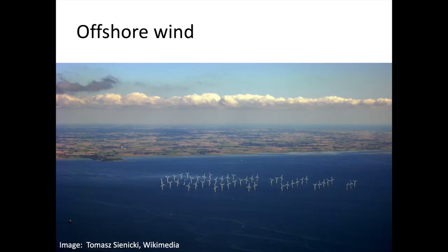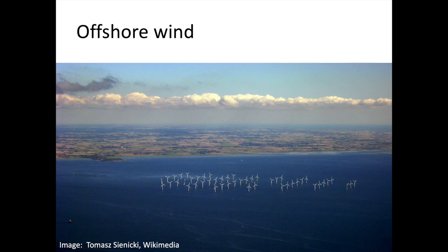Offshore wind generation presents some significant advantages over land-based wind farms. Offshore winds are 70 percent stronger and more consistent than on land because of land-sea heat differences that set up dependable wind patterns and the fact that the ocean has no topography to disrupt the wind. These factors mean that the same size wind farm can produce three times as much power offshore as it can on land. The Lillegrund offshore wind farm between Sweden and Denmark has 48 wind turbines that take advantage of winds of 8 to 10 meters per second and generate electricity for 60,000 homes.